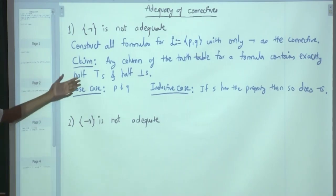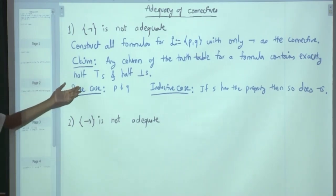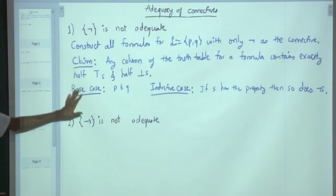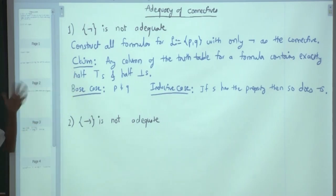As soon as you prove the claim, you are done. Why? Any binary connective which has 3 trues or 3 falses cannot be expressed in this language. So you are done.